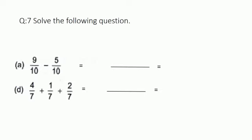Question number 7. Solve the following question, part A: 9 by 10 minus 5 by 10. Since they are like fractions, we just subtract the numerator and keep the denominator as it is. So 9 minus 5 is 4. The answer is 4 by 10.